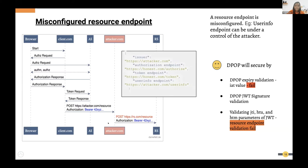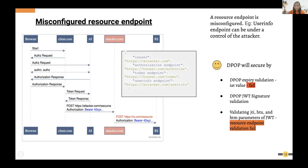DPoP mitigates this because every resource request includes a DPoP proof that must be validated. If the attacker sends the same DPoP to the resource server, the expiry time will likely fail. Also, since the endpoint information is embedded in the token and the attacker doesn't have the private key, they cannot change the DPoP endpoint information — so the resource server knows this is not the correct requestor.